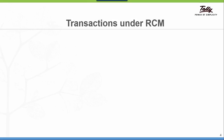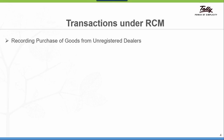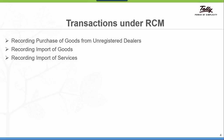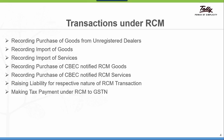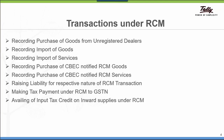The transactions under reverse charge mechanism we are going to cover include: recording purchase of goods from unregistered dealers, recording import of goods, recording import of services, purchase of CBC-notified reverse charge goods, purchase of CBC-notified reverse charge services, raising the liability for each type of reverse charge transaction, making the tax payment to the GST department, and availing input tax credit on inward supplies under reverse charge.